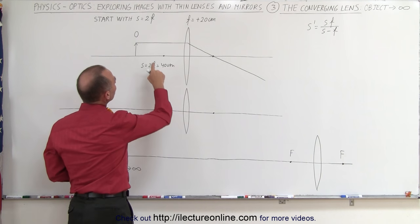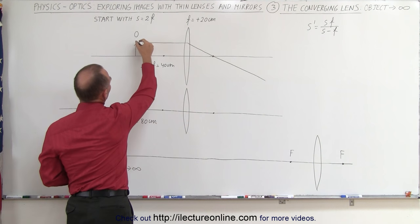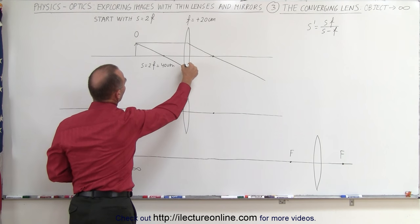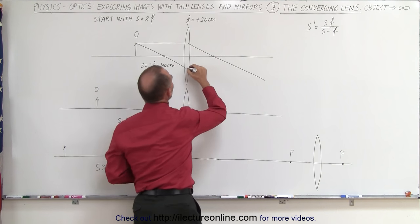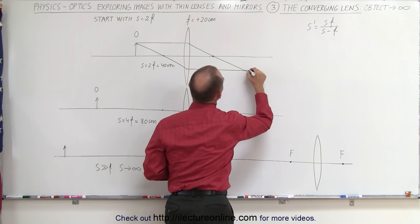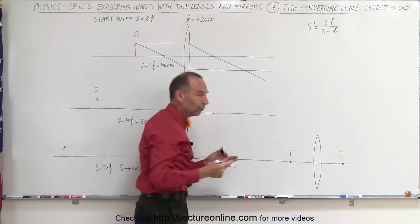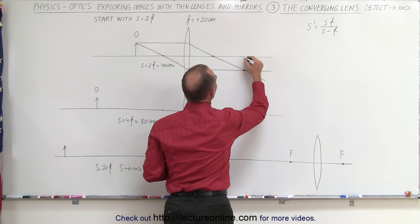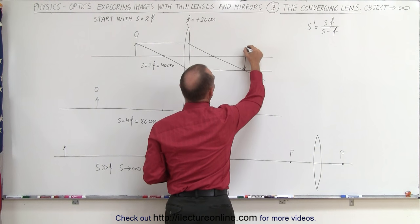The second line you draw from the top of the object to the focal point and beyond to the lens. When it gets to the lens it bends and then continues parallel to the optical axis on the other side until it intersects with the other ray. Where they intersect, that is the location of the image — so you can now draw the image right there.